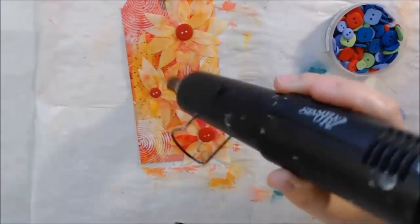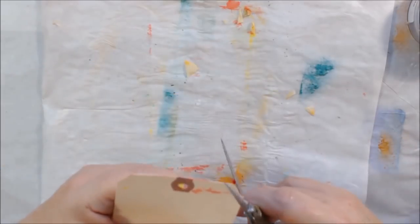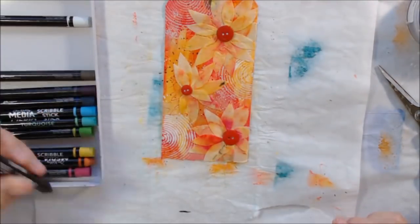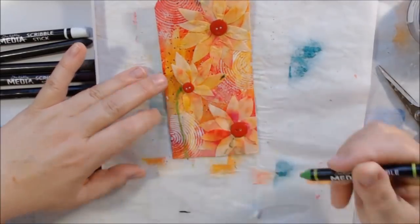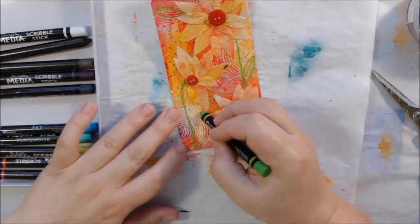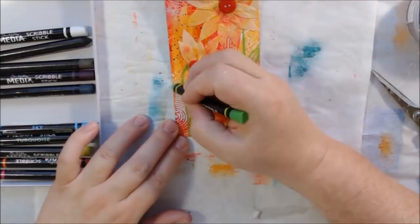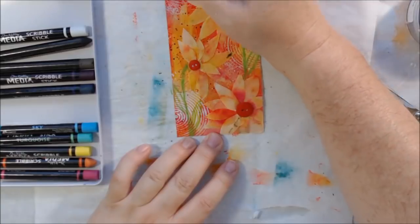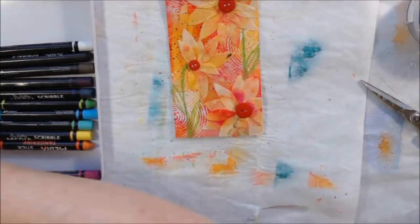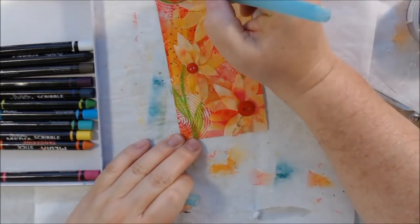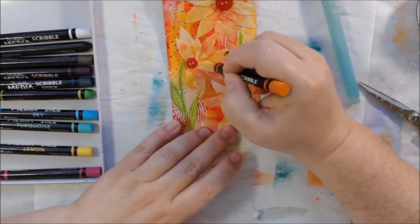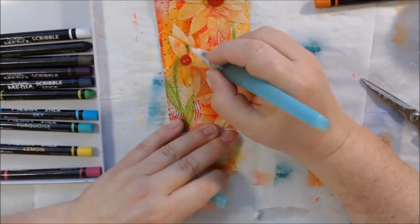Once this is all dry, I trimmed all the extra petals off the edges. I got out my new Dina Wakely scribble sticks and decided to draw on some leaves and stems onto my flowers, because otherwise they're just floating and flowers don't randomly float in the air. It was nice to add a little bit of contrasting color to the composition because it was all oranges, reds, and yellows, so having that little bit of green gives it more interest. I added a few stems and leaves in this bright green color.